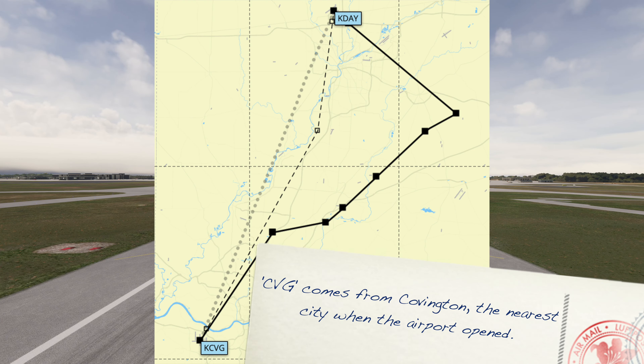The route has us proceed direct to Hede, where we'll join the Tiger for arrival. We'll climb to 14,000 feet. We're in position on runway 24. We've just received our takeoff clearance — let's go.